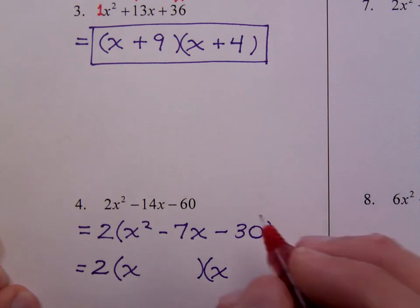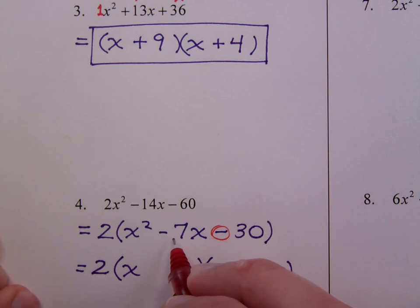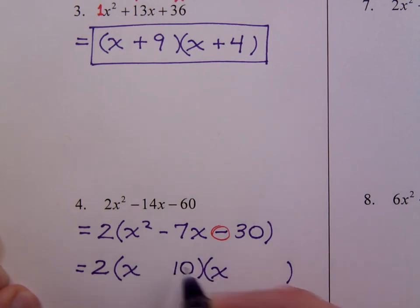Now, look at the minus sign we have right here. I need factors of 30 whose difference is 7. So multiply to get 30, but take the difference of those factors to get 7. Well, there are a lot of different ways to multiply to get 30, but there's only one combination that has a difference of 7, and that would be 10 and 3. Now, since this middle term is negative, that means the larger factor must also be negative.